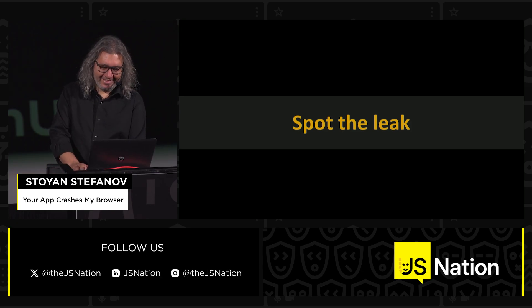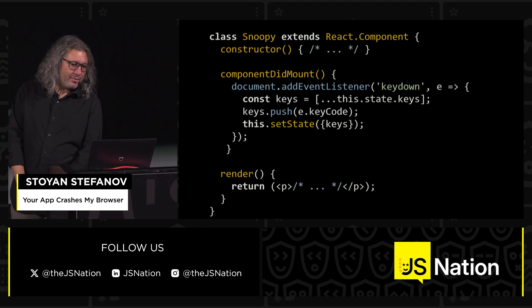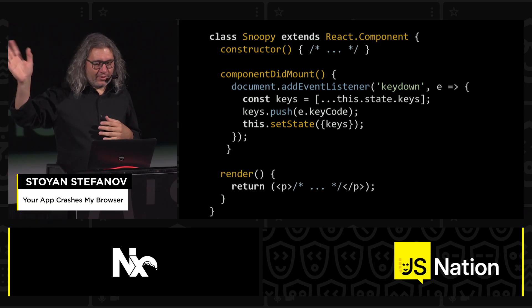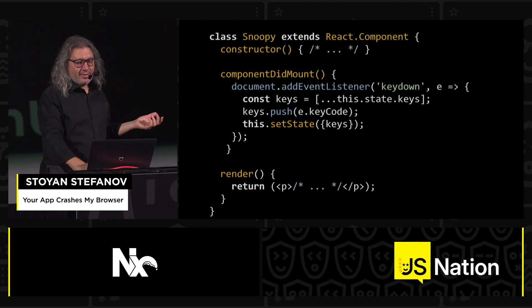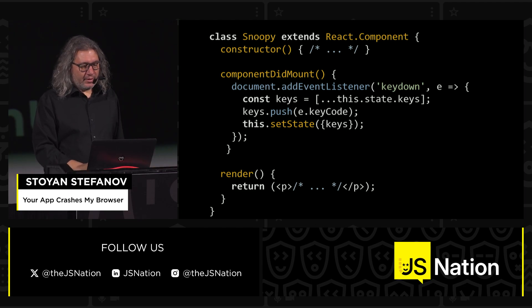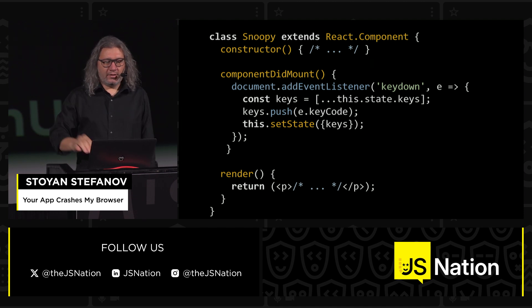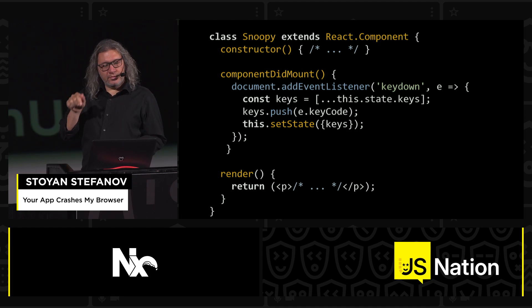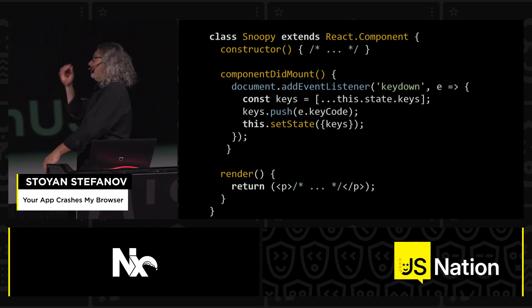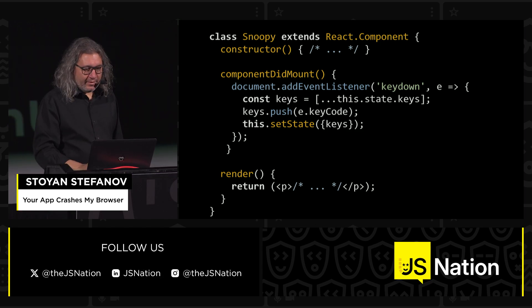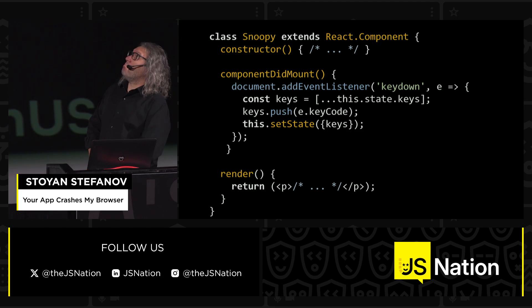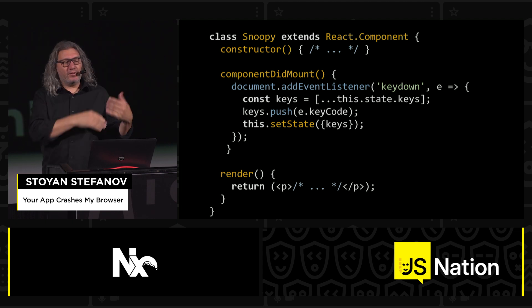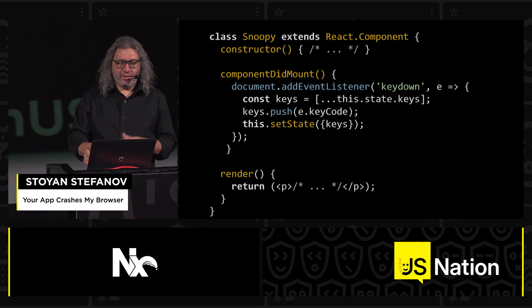Let's play 'spot the leak.' We start with a simple React class-based component — don't kill me. For those not familiar with React, it outputs some content and when it mounts it adds an event listener that listens to key presses. That's why it's called Snoopy — it snoops on everything you press. Where's the leak? When you remove Snoopy from the DOM tree, that listener will keep on listening and the event listener will still be around.